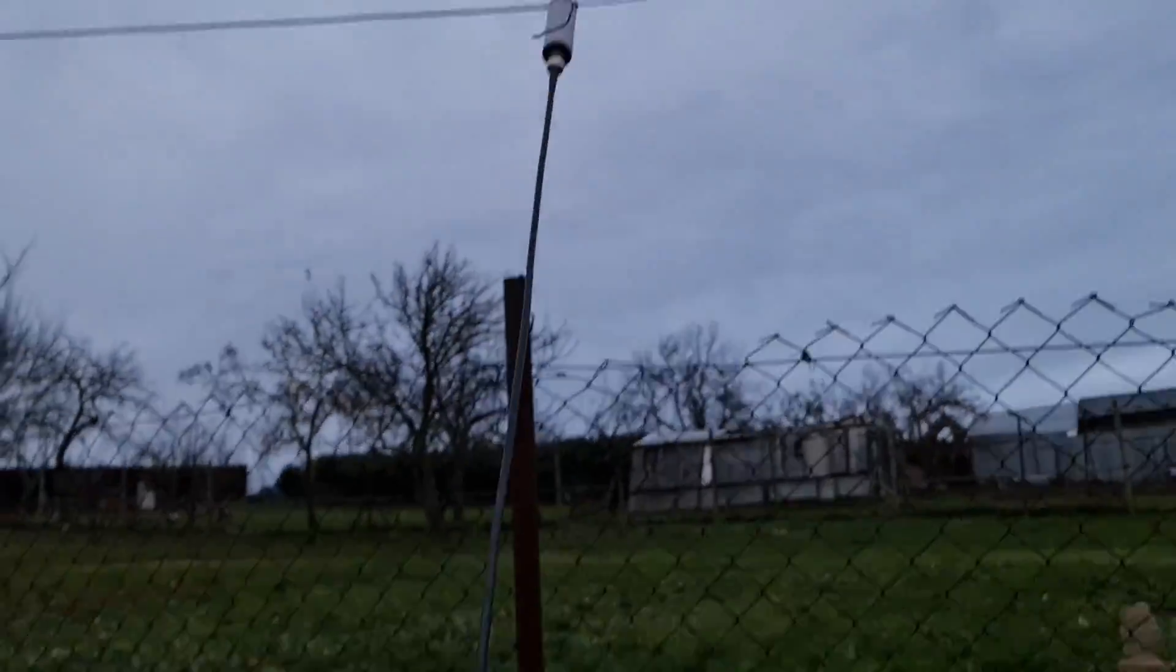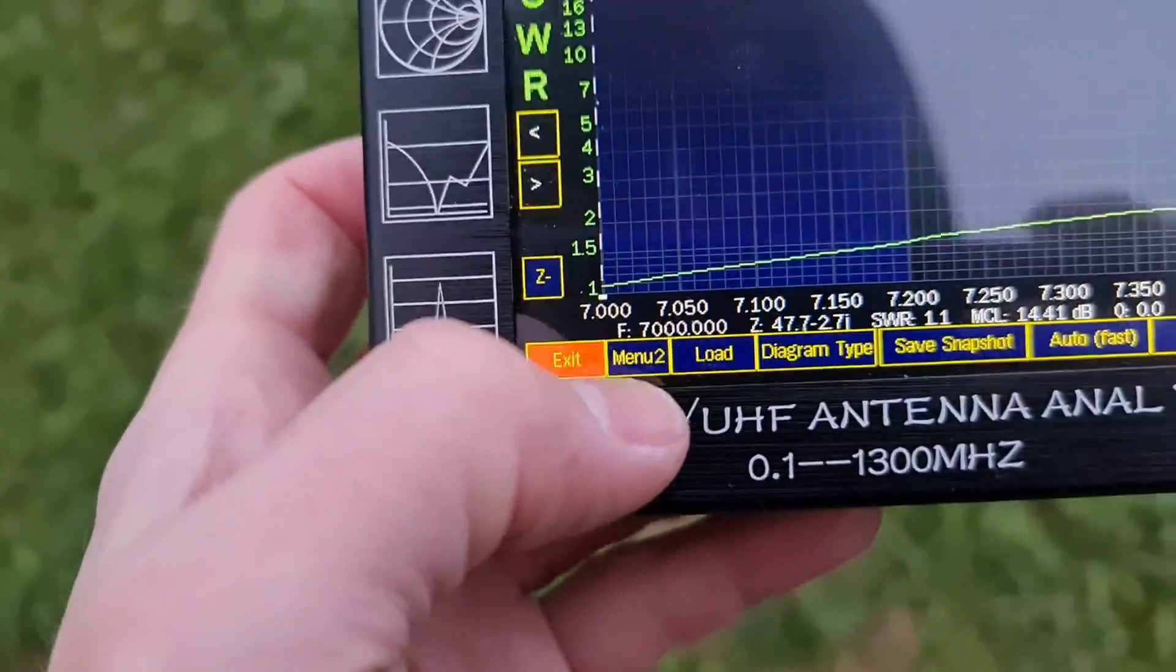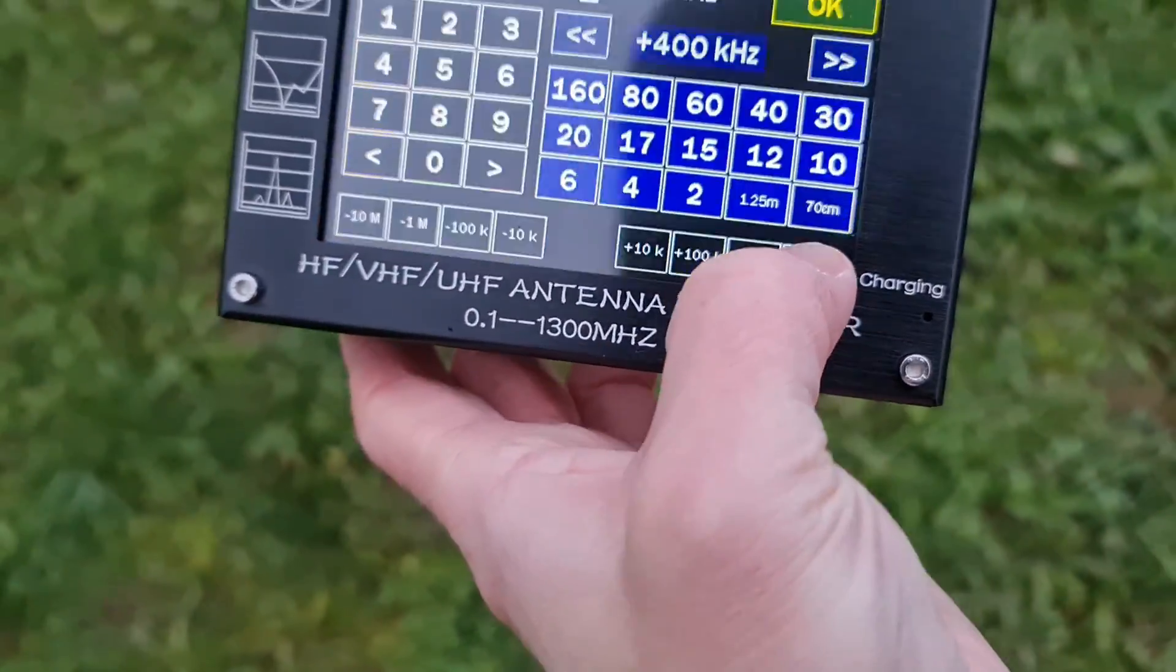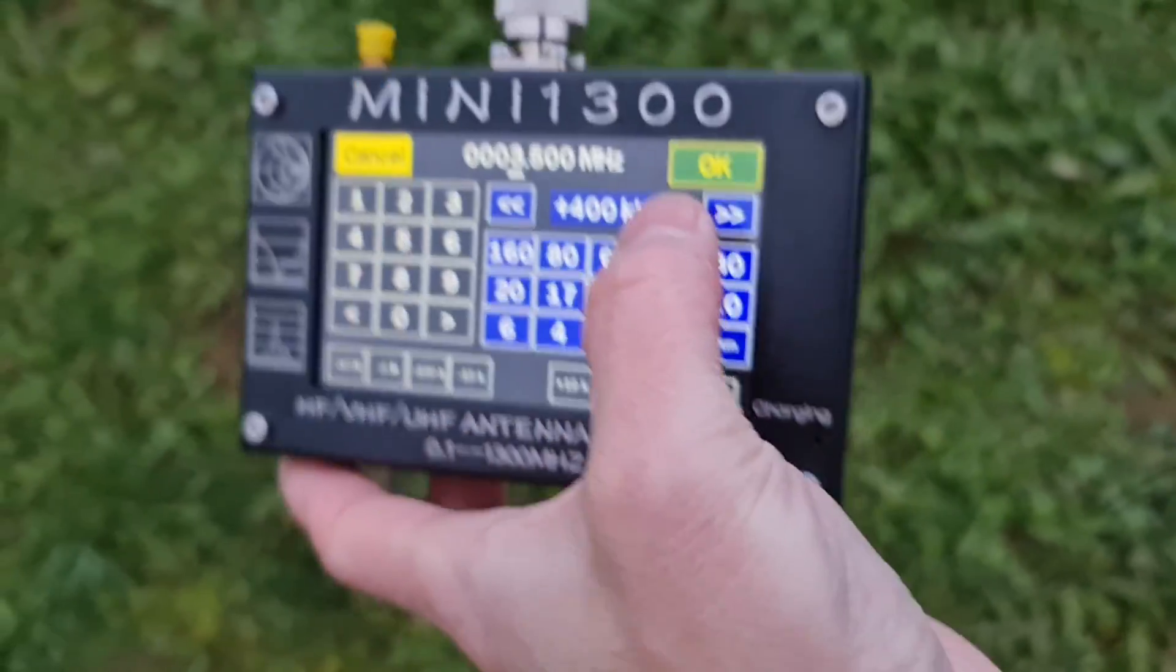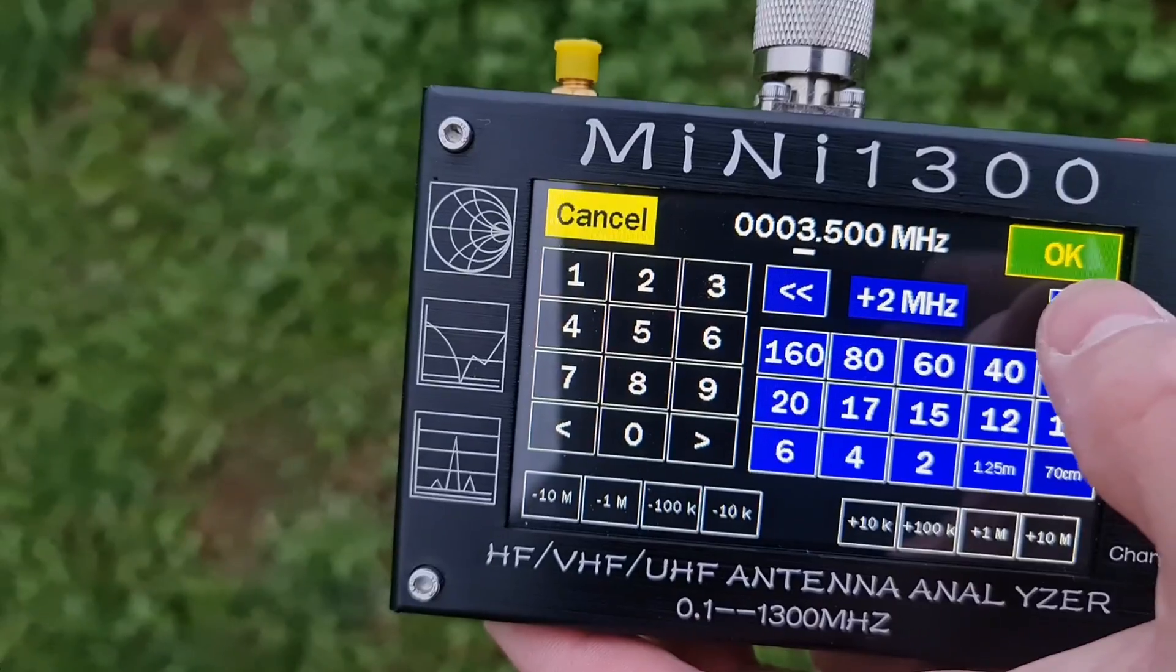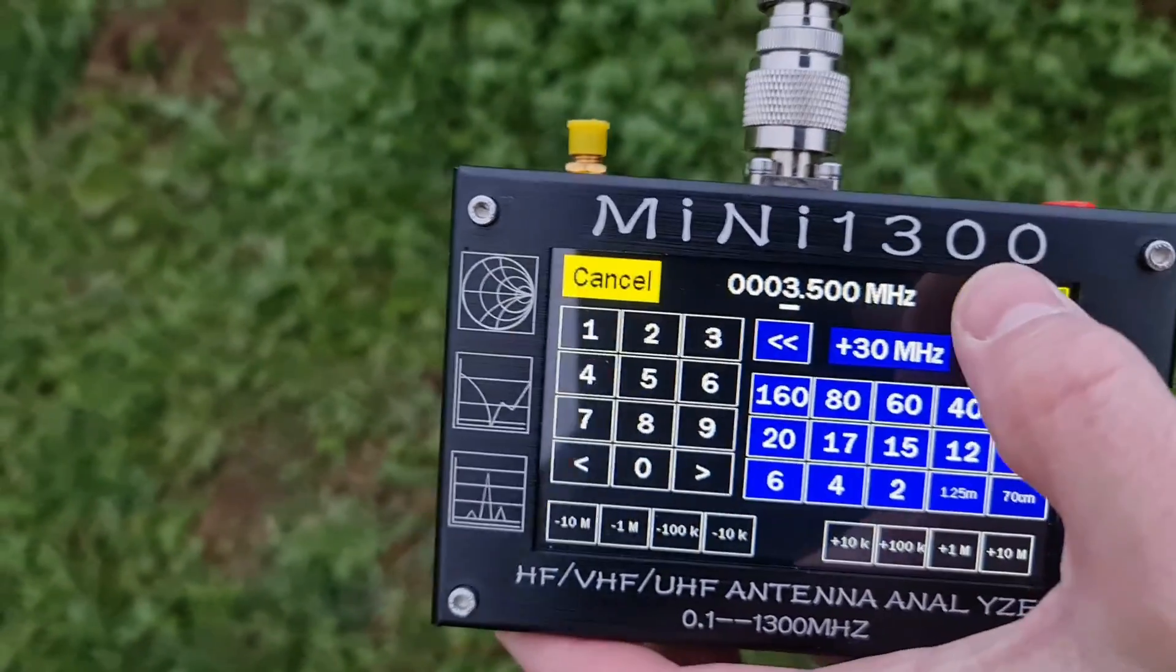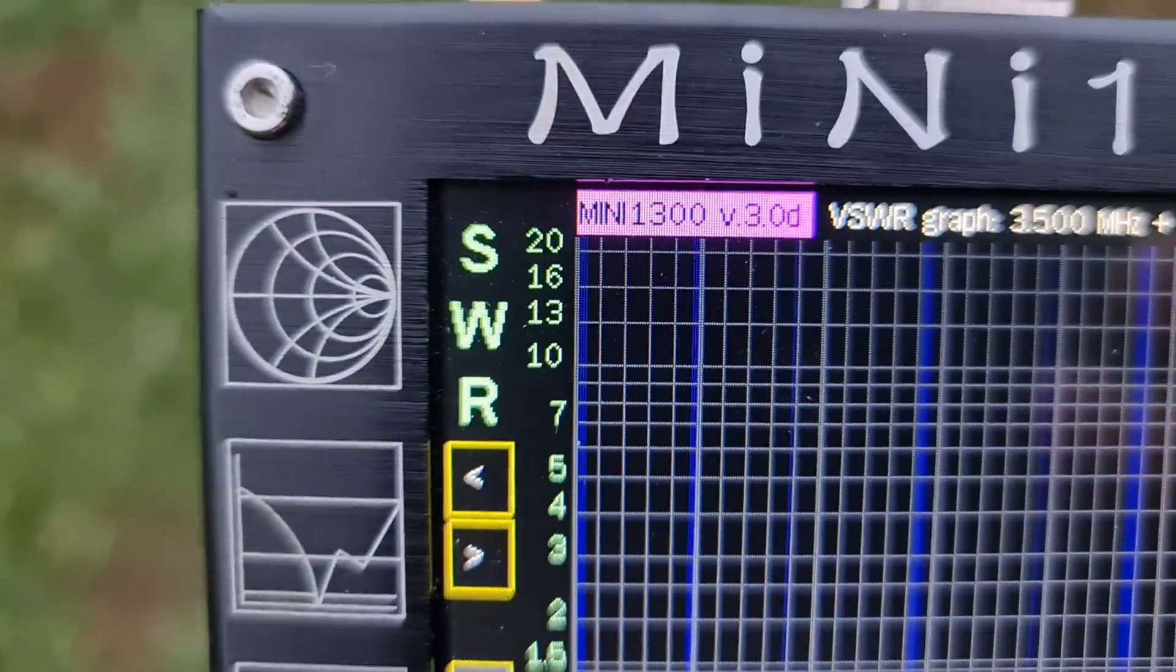Now let me show you how the graph looks like when I set a wider range. I need one more hand. Okay, 30 max. You can see these blue lines.